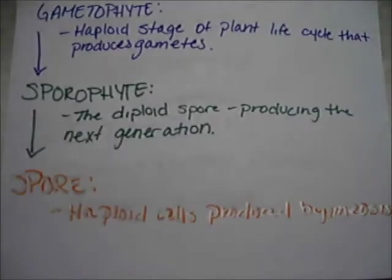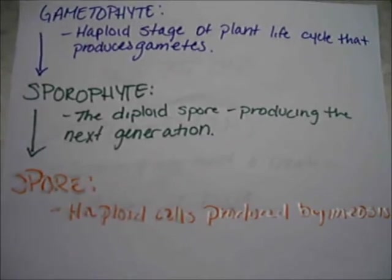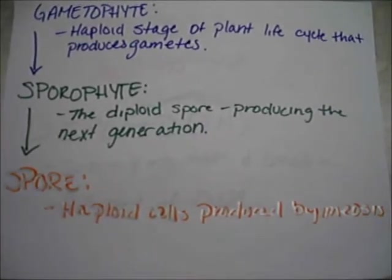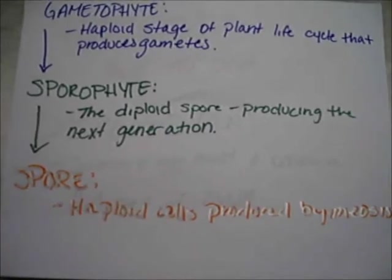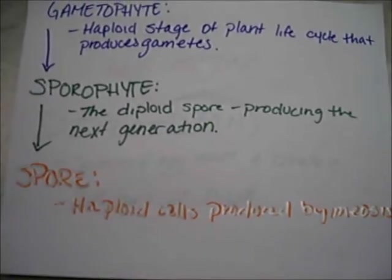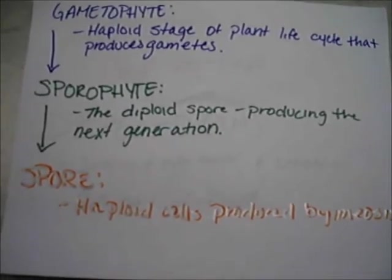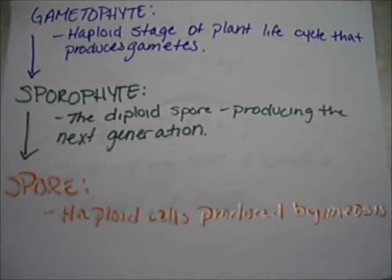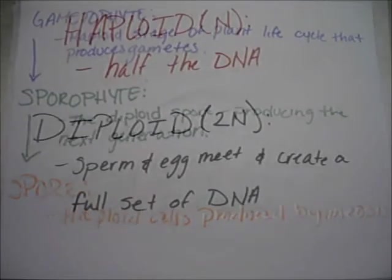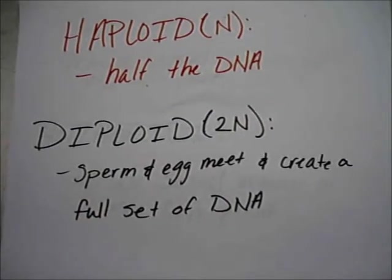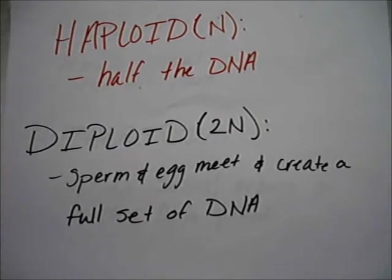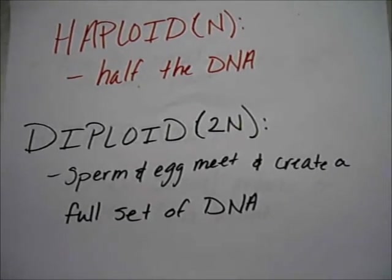These will be the terms we hear in today's video. Gametophyte: the haploid stage, a plant life cycle that produces gametes. Sporophyte: the diploid spore-producing stage that creates the next generation. Spore: haploid cells produced by meiosis. Haploid: half the DNA. Diploid: when sperm and egg meet and create a full set of DNA.